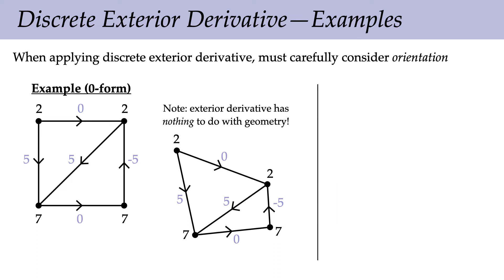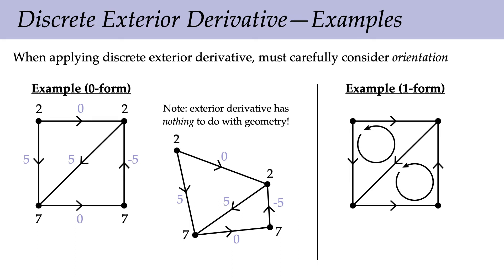Let's look at a discrete exterior derivative on a one-form. We have the same mesh, but now we start with values on the oriented edges and compute values on the oriented triangles. For the upper-left triangle with counter-clockwise orientation, we integrate over the boundary and add up the values: 3 minus 9 minus 7 equals minus 13. The minus signs arise because the orientation of those edges is opposite to the orientation of the triangle.